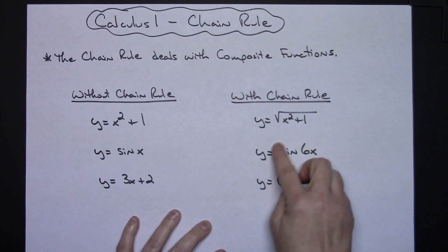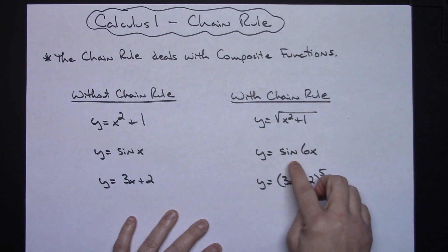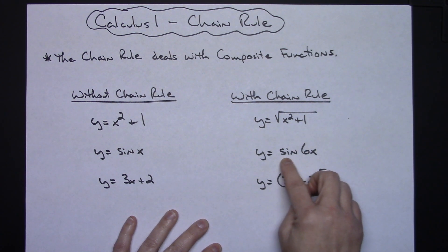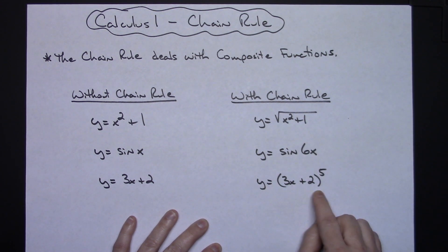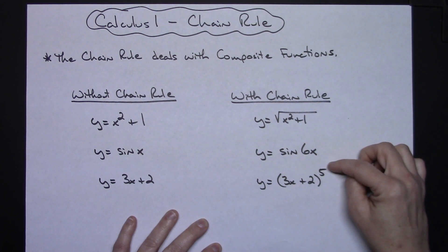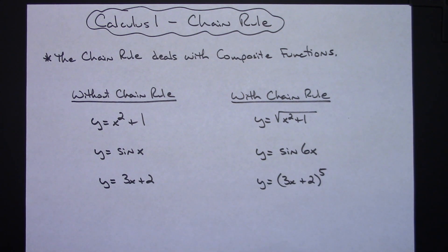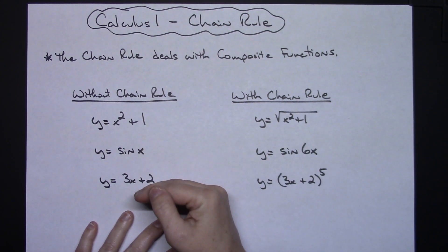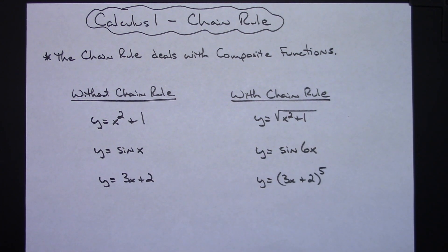Looking at sine of 6x — now that we're introducing chain rule, we can take the derivative of this. The outside function is sine, the inside function is 6x. Similarly, the inside function would be 3x plus 2 and the outside function is something raised to the fifth power. You probably didn't realize it, but when you first started derivatives you were only doing non-composite functions. You cannot differentiate composite functions until you introduce the chain rule.